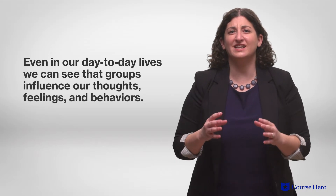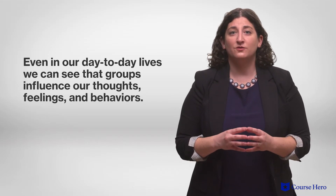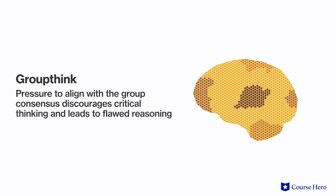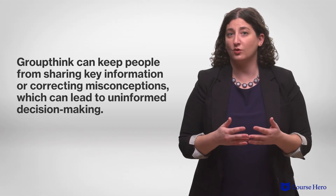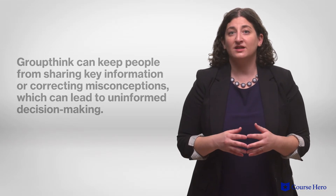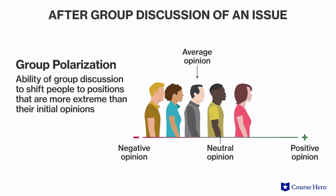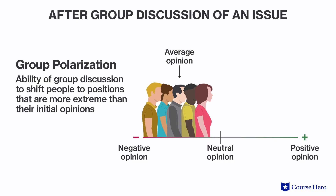This study is scary and extreme. But even in our day-to-day lives, we can see that groups influence our thoughts, feelings, and behaviors — for example, in groupthink. Pressure to align with the group consensus discourages critical thinking and leads to flawed reasoning. Groupthink can keep people from sharing key information or correcting misconceptions, which can lead to uninformed decision making. It can also lead to more extreme views and cause people to overlook obvious problems. This is known as group polarization — the ability of group discussion to shift people to positions that are more extreme than their initial opinions.